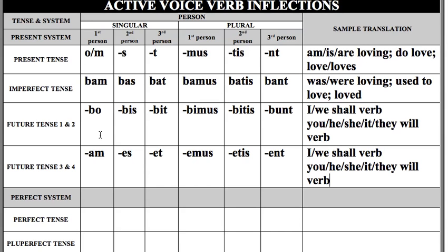And then verse two: am, ace, et, amos, etis, ent — future tense for three and four with a knick-knack paddywhack, get yourself an A, learn these endings right away.